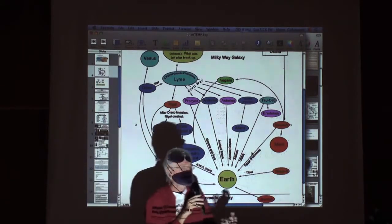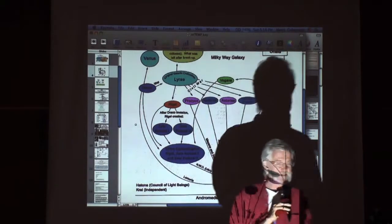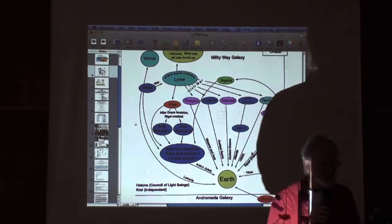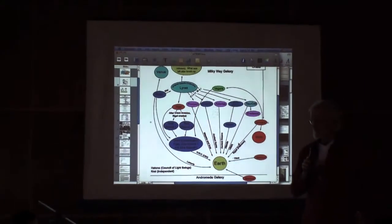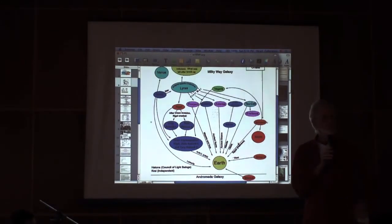And actually, the Anunnaki, the Anu family, they came directly from Pleiades, which most of the indigenous tribes of Earth regard as their star home.